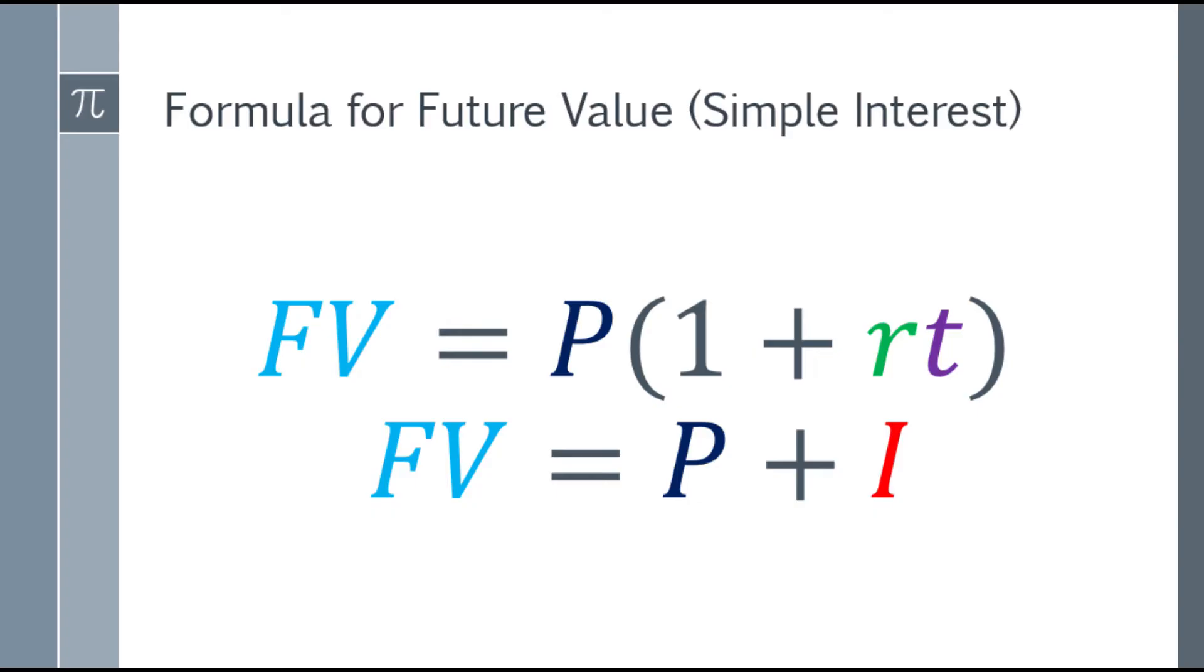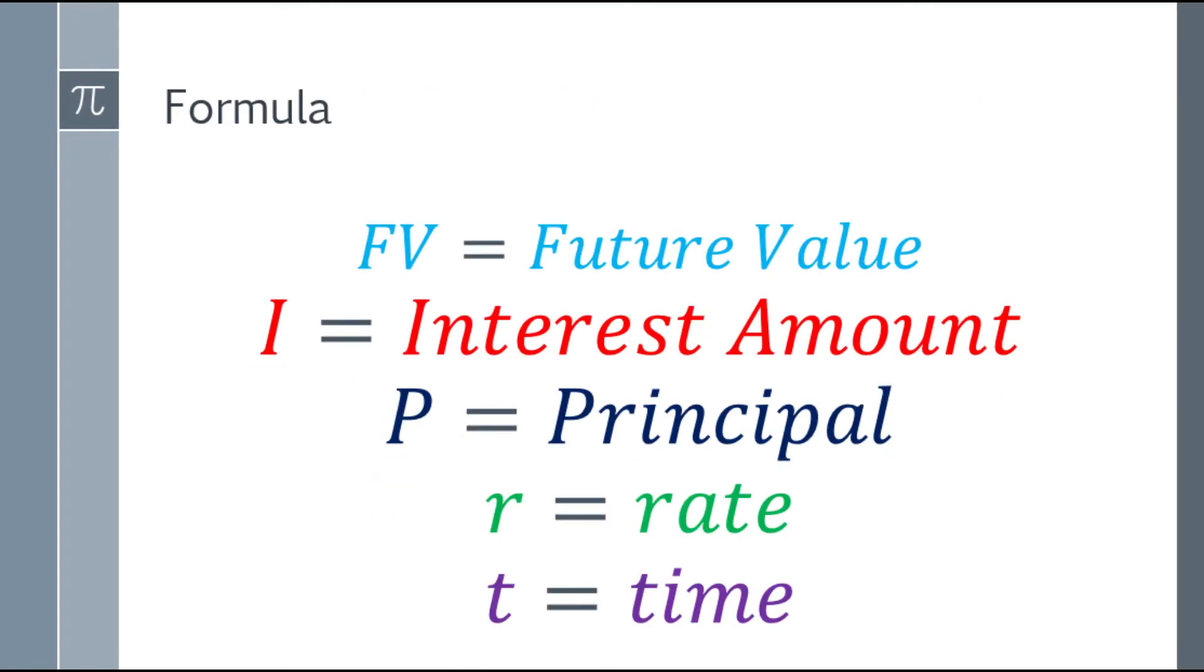The second one is future value is equal to the principal plus interest. If FV means future value, and I is interest amount, P is for principal or also called present value, R is rate, and T is for time.